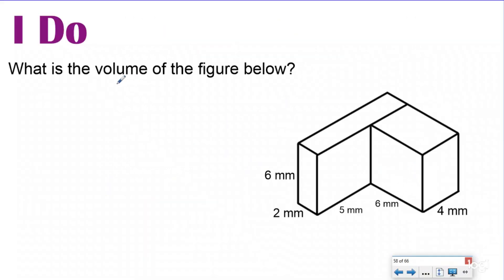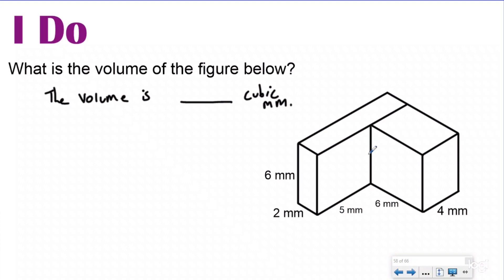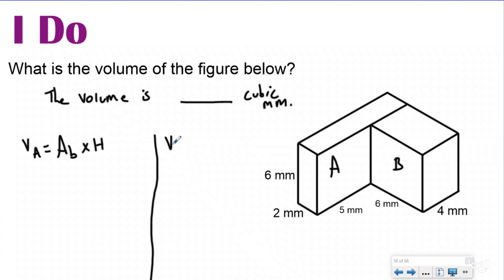Our 'I do' problem: what is the volume of the figure below? The volume is blank cubic millimeters. For this one they already have a line splitting the two prisms — some states like North Carolina give you the two separate prisms already split apart. I'm going to label these prism A and prism B, and write down: volume of prism A equals area of the base times the height, and volume of prism B equals area of the base times the height.